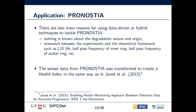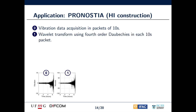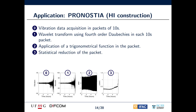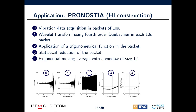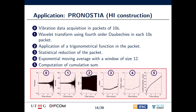In order to apply the proposed degradation model to Prognostia, we use the health index proposed by Javed. The health index construction is made in five steps after sensor data are acquired in packets of 10 seconds each. First, a wavelet transformation is done in each packet using fourth-order Daubechies. In the second step, a trigonometric function is applied in the packet that will then be reduced using a statistical function such as the standard deviation. The data are then smoothed using an exponential moving average, and finally a cumulative sum is taken. This picture shows each step, starting from the raw data all the way to the constructed health index.